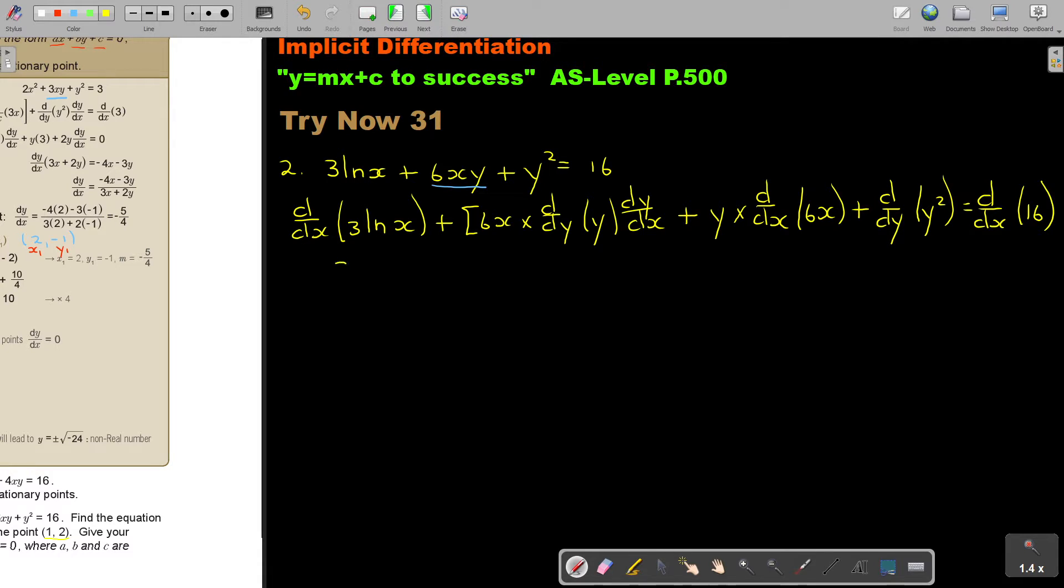Now I do it. So this one is going to be 3 times 1 over x, plus 6x dy/dx, plus y times 6. This one is going to be 2y. Oh, look, I always check myself. I forgot the dy/dx in the second step. I checked myself.